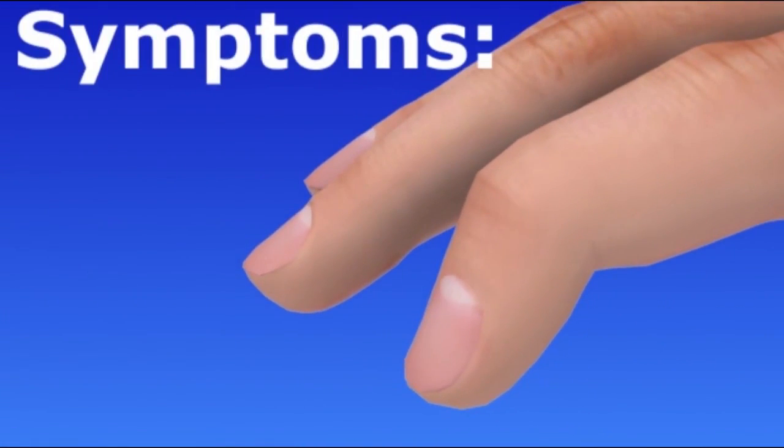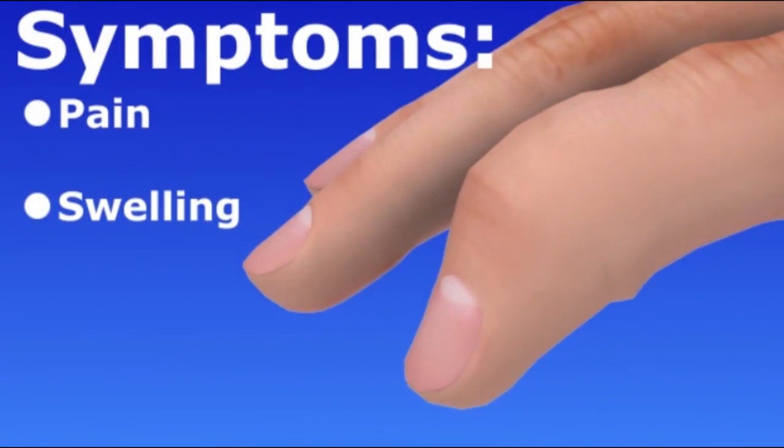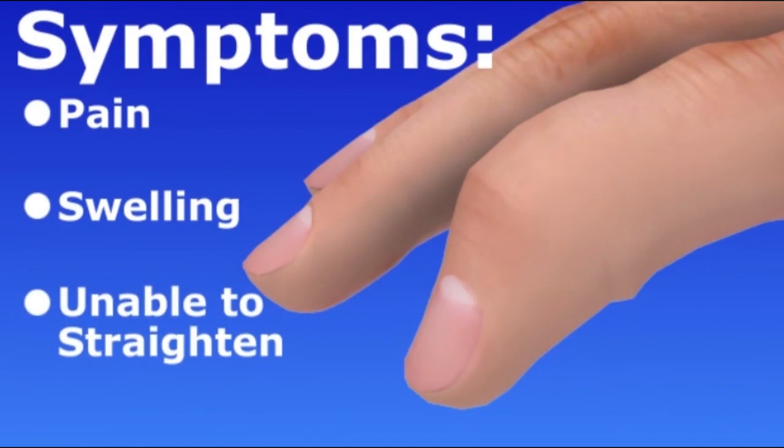Mallet finger causes pain and swelling at the joint at the end of the finger. You will not be able to straighten the end of your finger; instead it will droop.